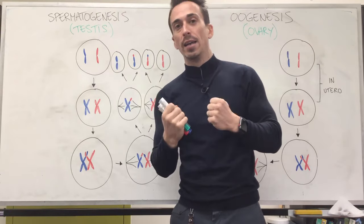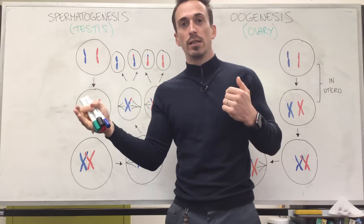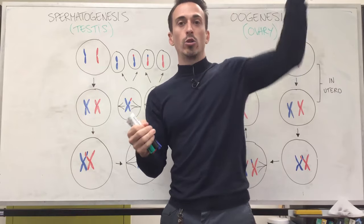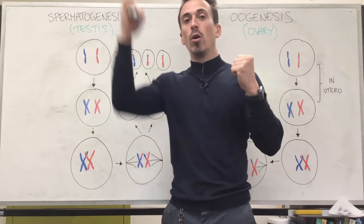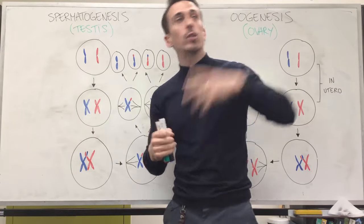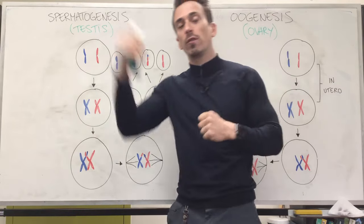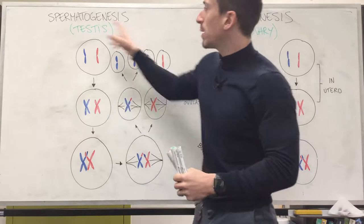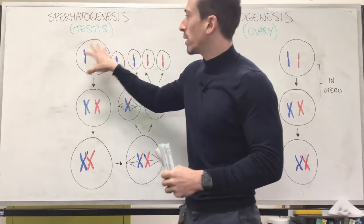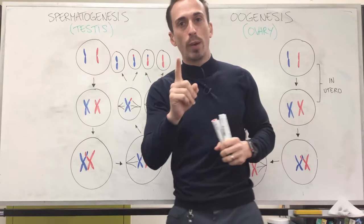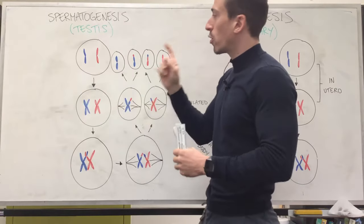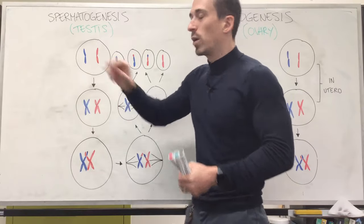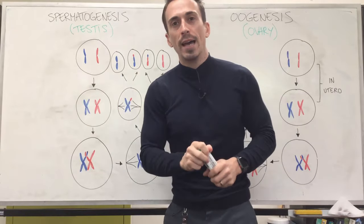You have one chromosome from mum and one chromosome from dad, and you have 23 pairs of these. So for chromosome pair one, I took one from mum and one from dad — all the way up to the 23rd pair of chromosomes. Instead of drawing all 23 pairs, I just chose chromosome one here. You can see I got the blue one from mum and the red one from dad.